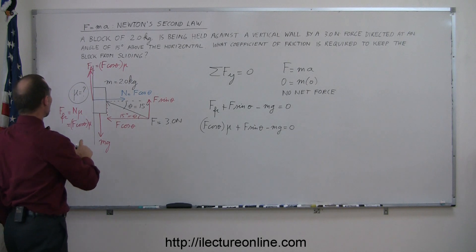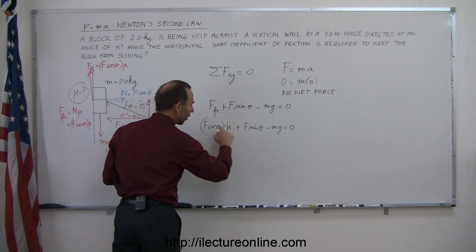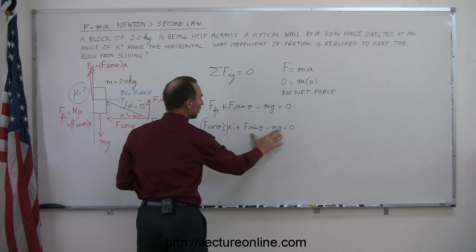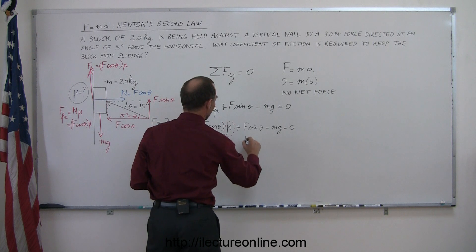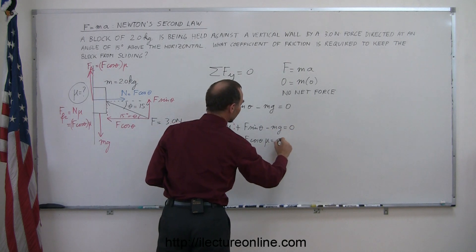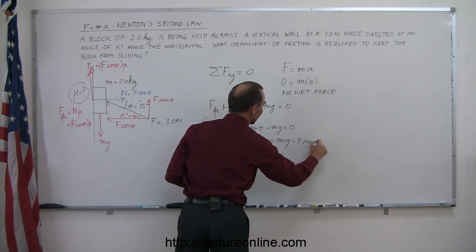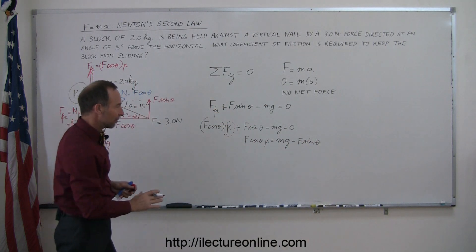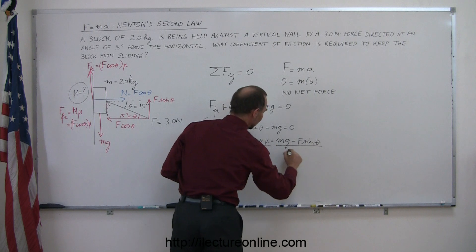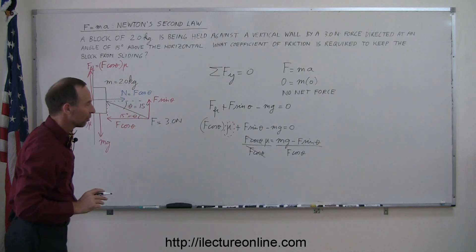Since we're looking for the coefficient of friction mu, we solve the equation for mu. Moving the other terms to the right side: f cosine theta times mu equals mg minus f sine theta. Dividing both sides by f cosine theta, we get mu equals (mg minus f sine theta) divided by (f cosine theta).